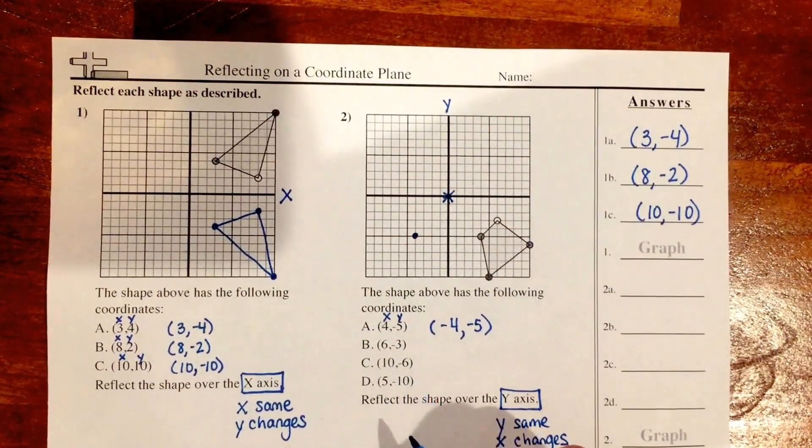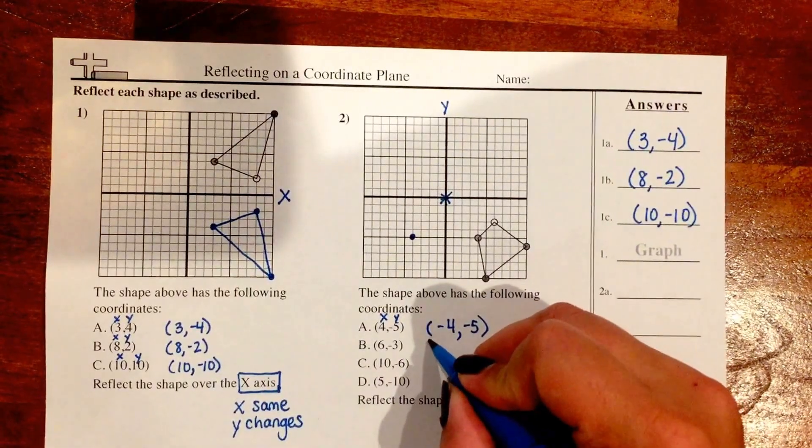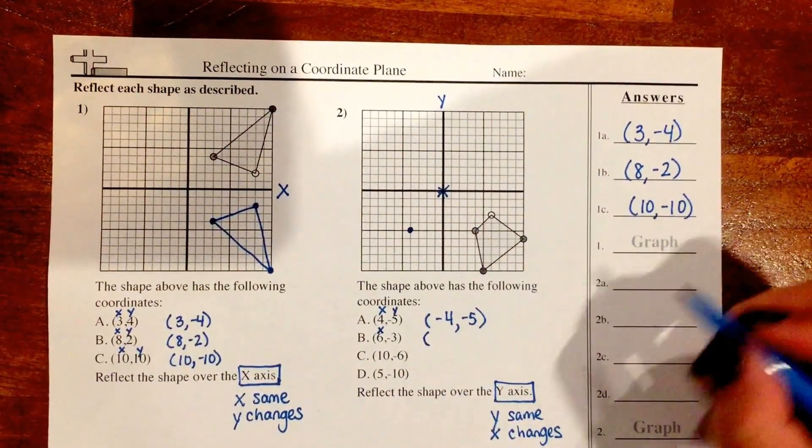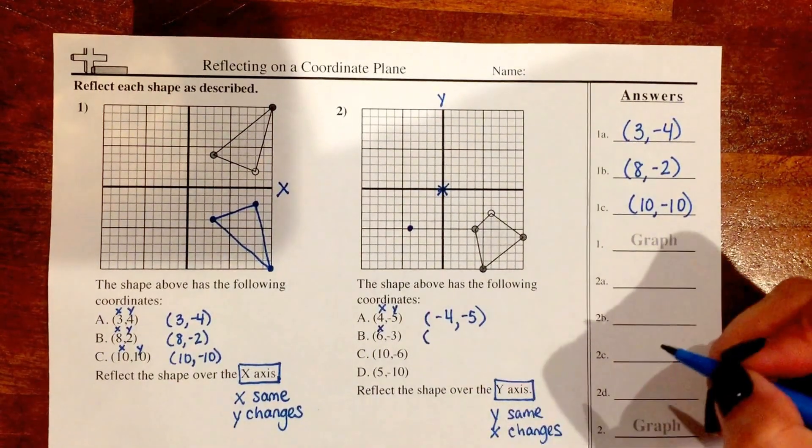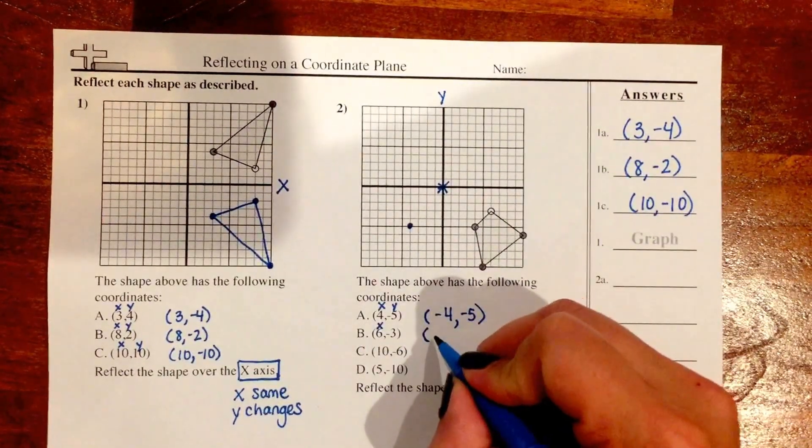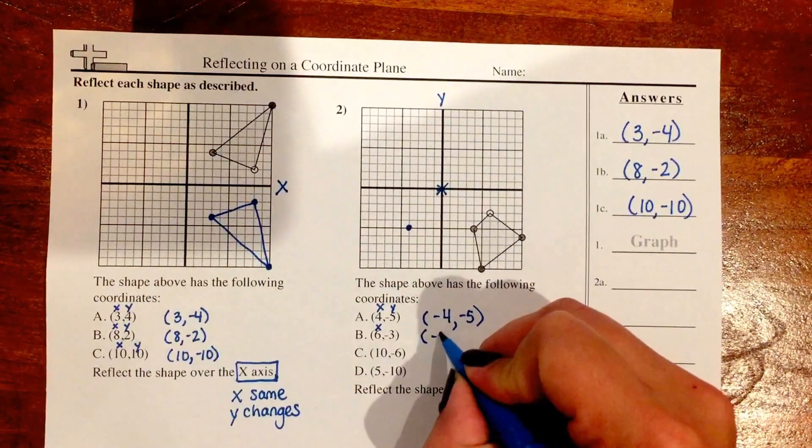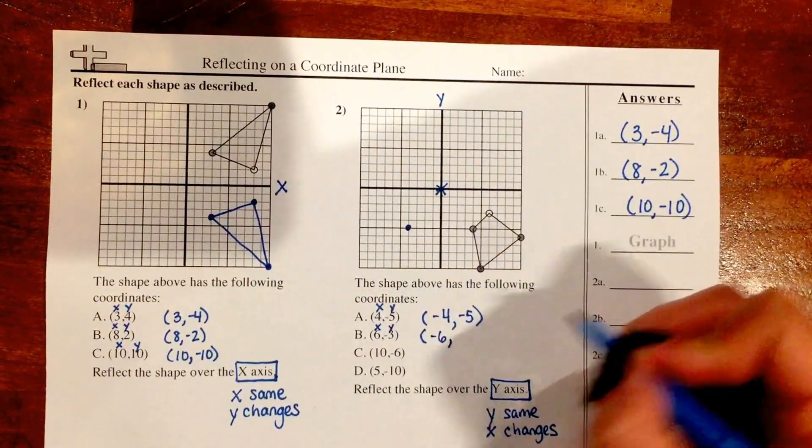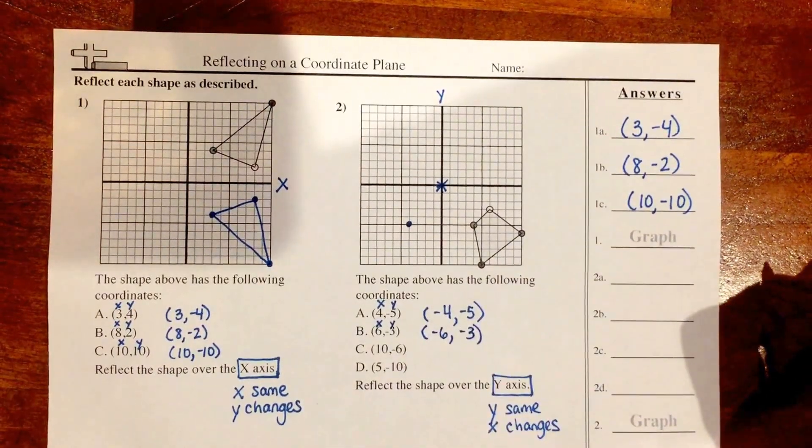Let's look at point B which is (6, -3). I know my 6 is my x-coordinate, and when we flip over the y-axis the x is the one that changes. So I'm going to change my positive 6 to a negative 6, and I'm going to keep my y as -3 because the y-coordinate stays the same.